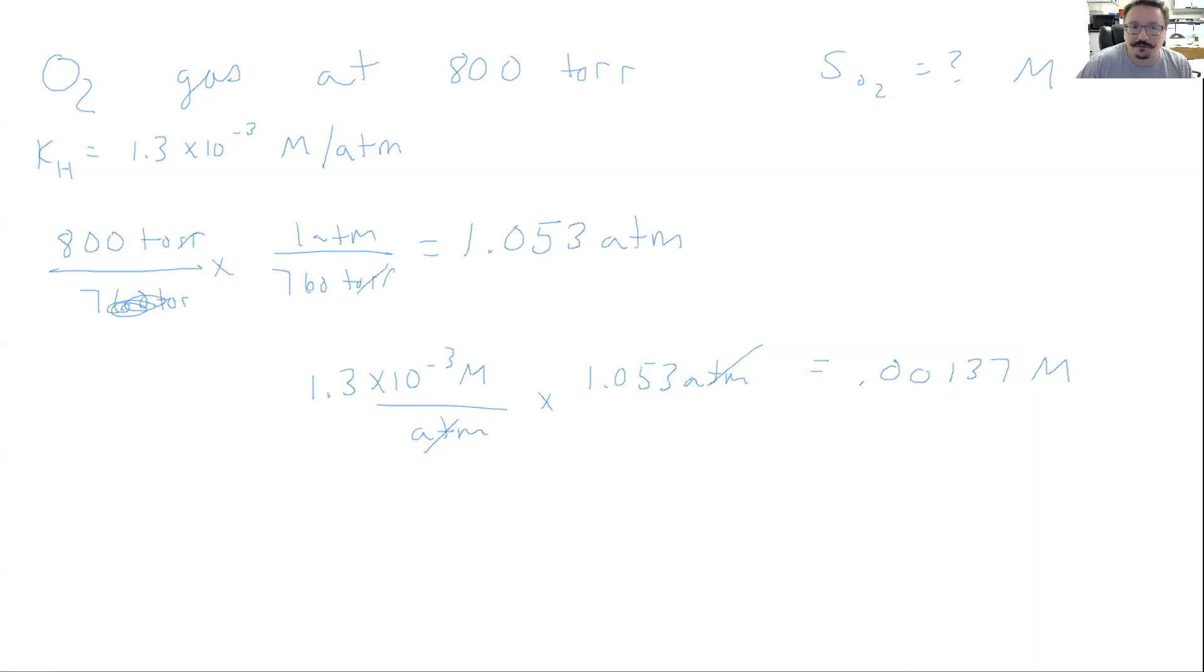And we should see that this is 0.00137 molar or molarities of that O2 gas, which makes sense. It's a gas. We're not going to be able to get a lot of it dissolved. We're rarely going to be able to get a super concentrated gas solution in some liquid or in water in this case. But that's how you'd utilize that Henry's law equation. Like I said, the other example you can see is being given the solubility and having to find the pressure, but just two components there, not a lot to that equation.